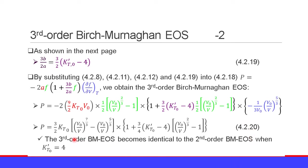The third-order Birch-Murnaghan equation of state becomes identical to the second-order Birch-Murnaghan equation of state when KT0 prime equals 4, because when that bracket term becomes 0 it reduces to the second-order form.